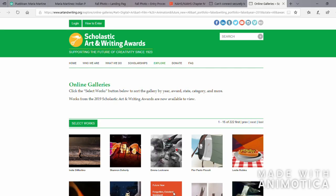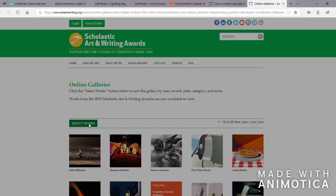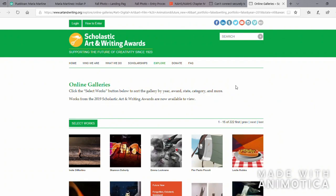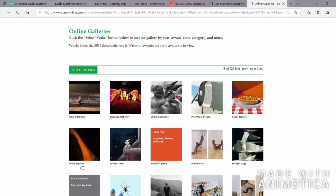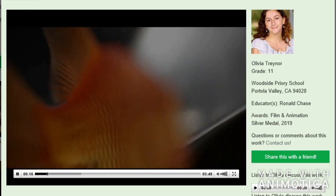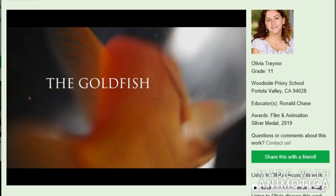I have included a link below that will take you to a gallery of prior winners that you can look through on your own in a minute, but first I want you to go to the gallery and click Select Works and Filter by Digital Art in Film and Animation. Here you will find a video by Olivia Traynor called The Goldfish. I want you to pause this video you're watching and go watch The Goldfish. After you've watched it, resume playing this video.